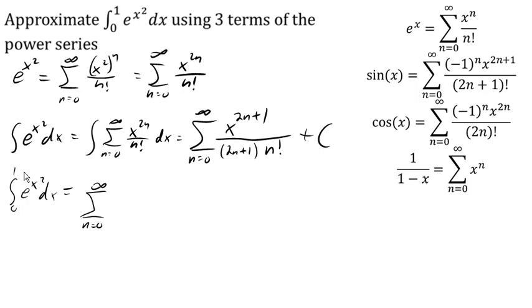plugging in 1. 1 to the 2n plus 1 over 2n plus 1 times n factorial, minus the sum from n equals 0 to infinity. Now we're going to plug in 0 for x. 0 to the 2n plus 1 over 2n plus 1 times n factorial.